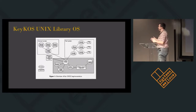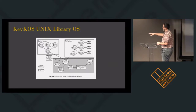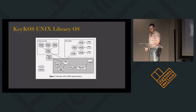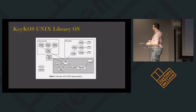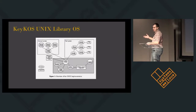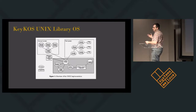They call a process a domain and an address space a segment. They got really excited about object-oriented programming. So a Unix process decides it's going to make an open system call, which gets trapped by the Unix keeper process — the Unix emulation layer. That sends a message to the inode for the directory the file you're opening lives in. The inode is actually a running process with its own code and data. It sends a message to its B-tree, which is a collection of the inodes it contains, and a message goes back through this call chain.